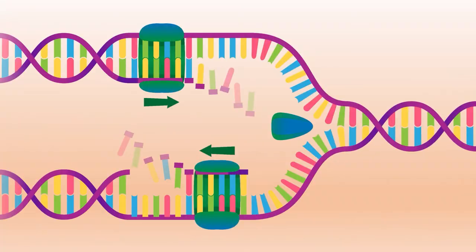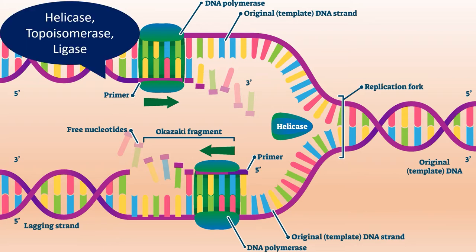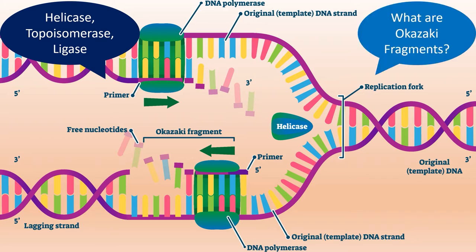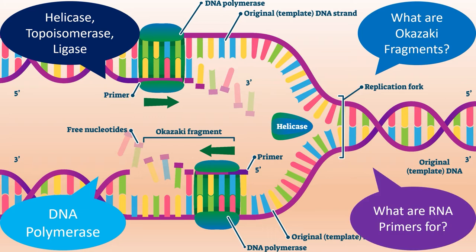DNA replication is a convoluted process, with many moving parts and pieces that need to be combined in a specific order. Yet somehow, this process happens in your body every day, with almost no errors. Several proteins, RNA primers, and other molecules work together to unwind a DNA molecule and replicate it exactly in a semi-conservative way.